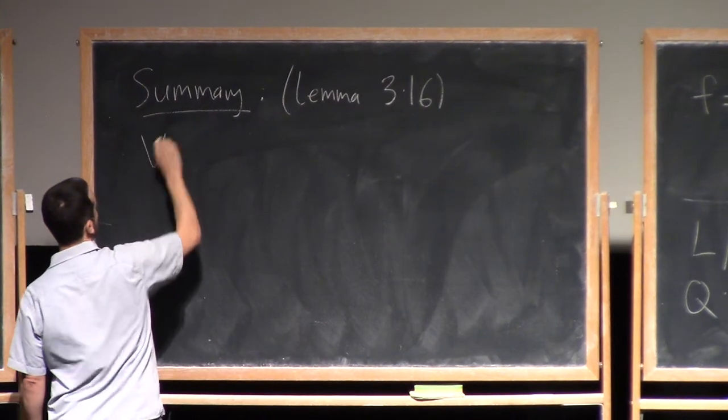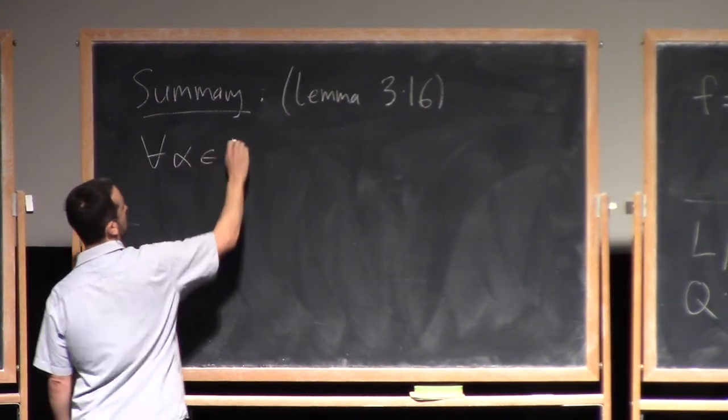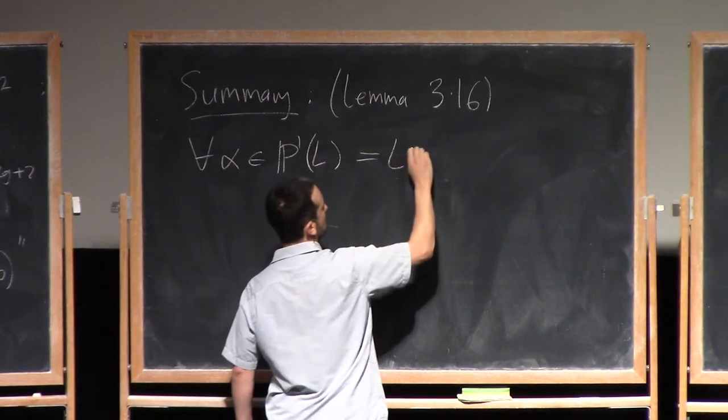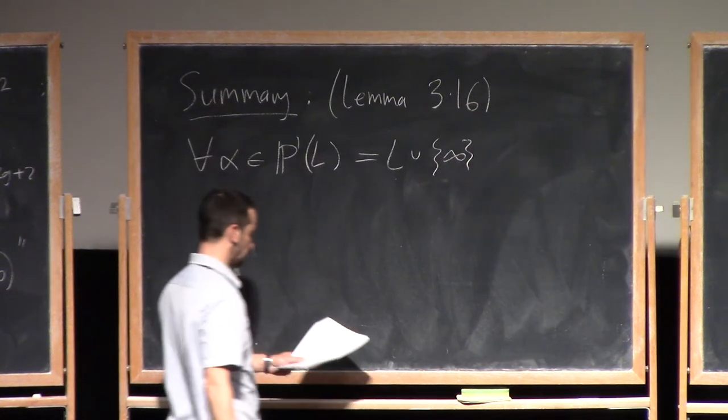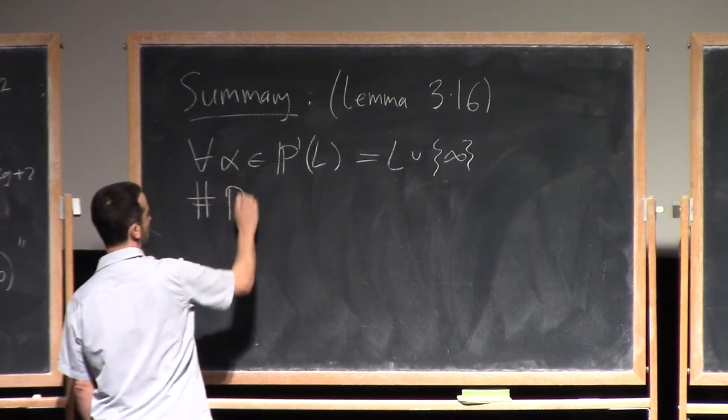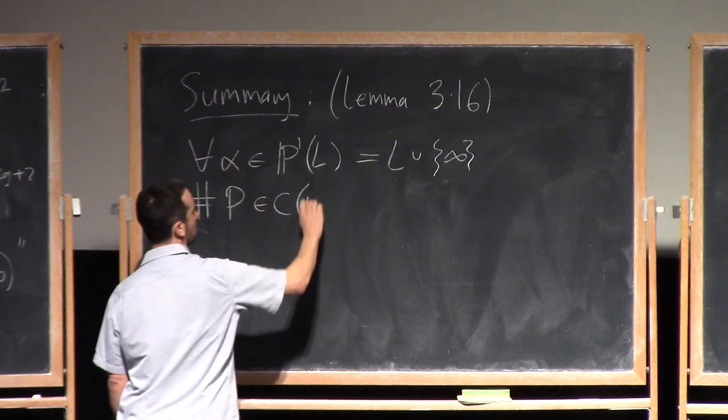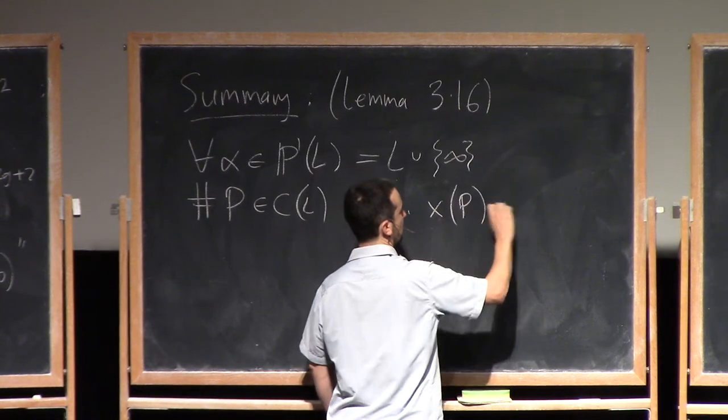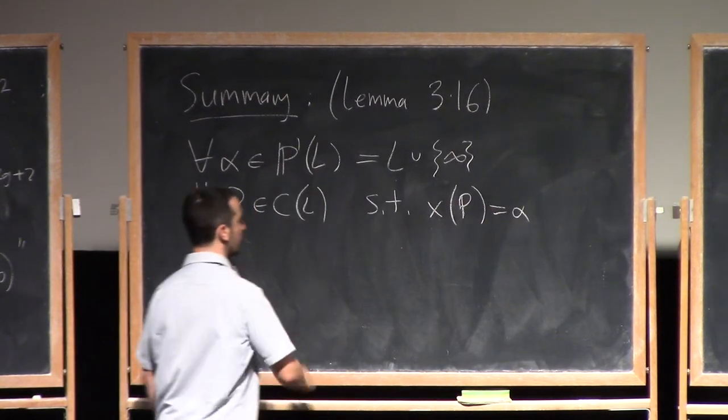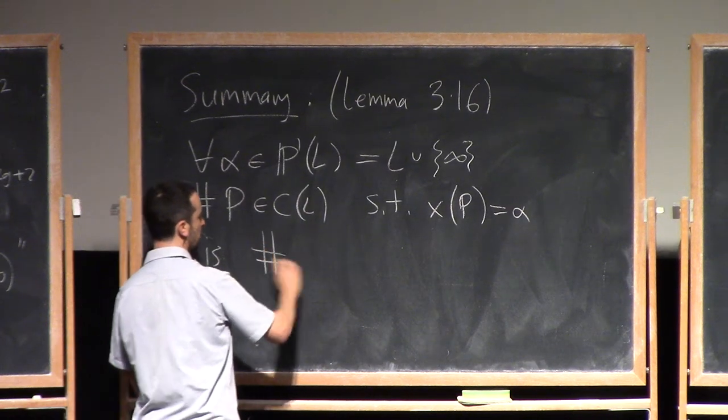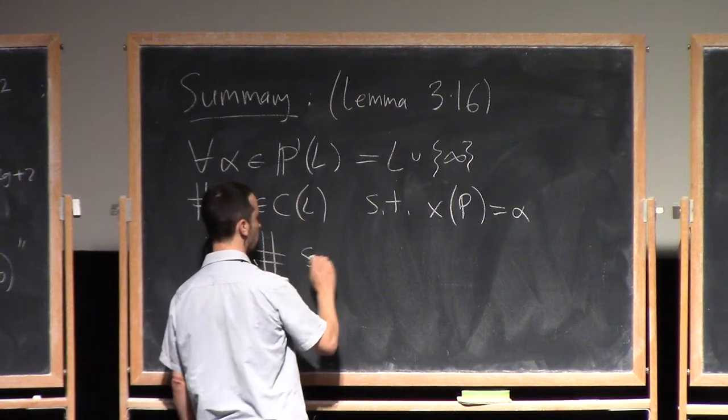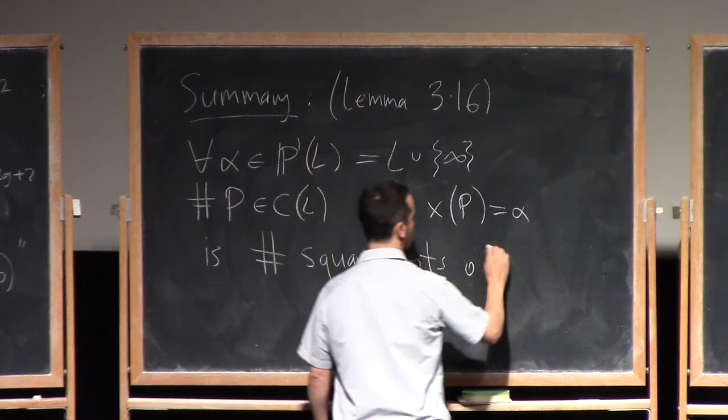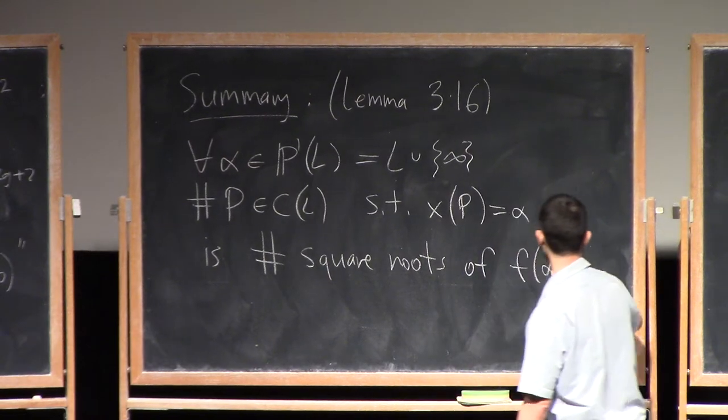So for all alpha in P1L, remember this is L union infinity, the number of points in CL such that XP is alpha is the same as the number of solutions, or the number of square roots of F alpha in L.